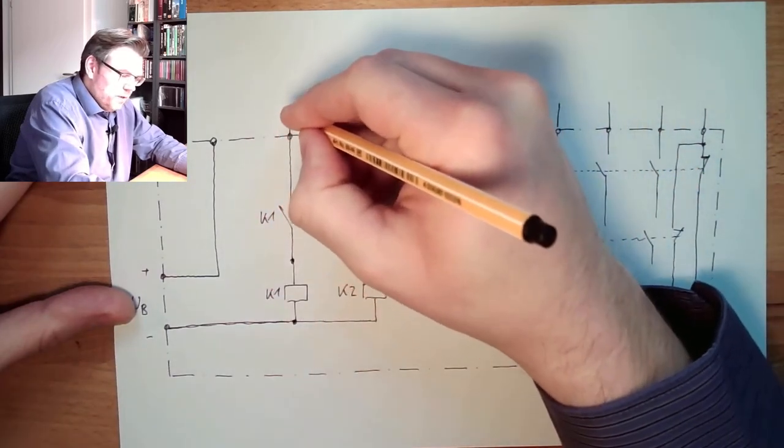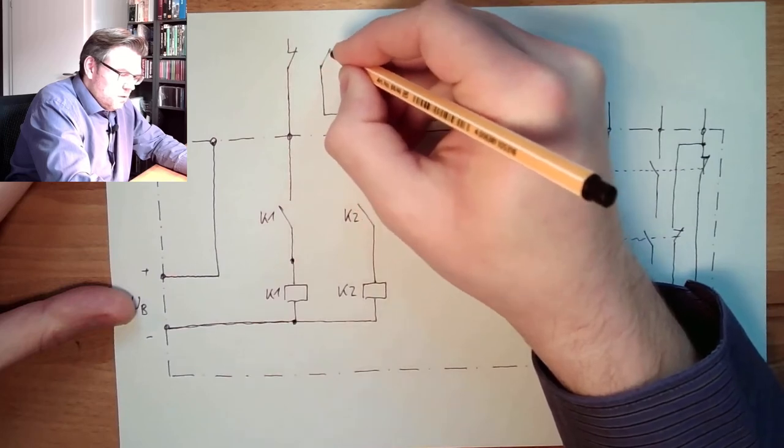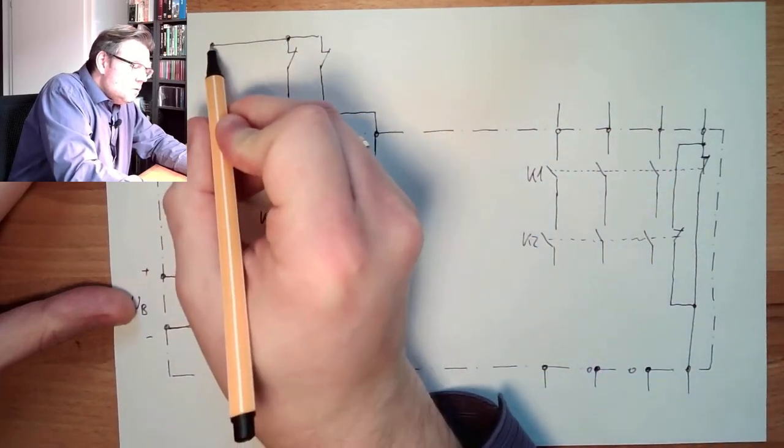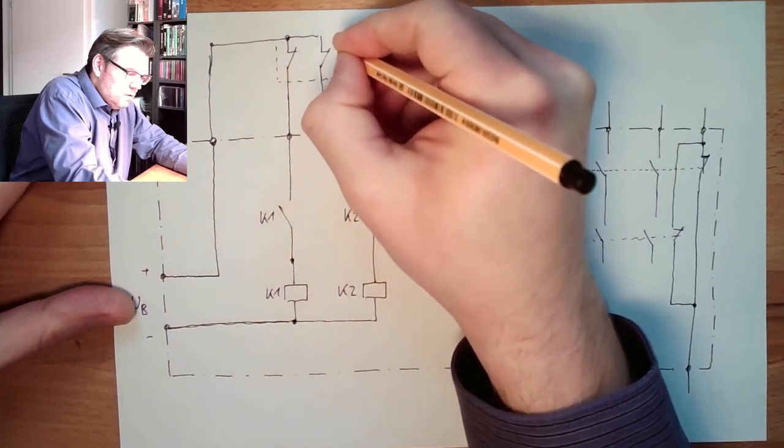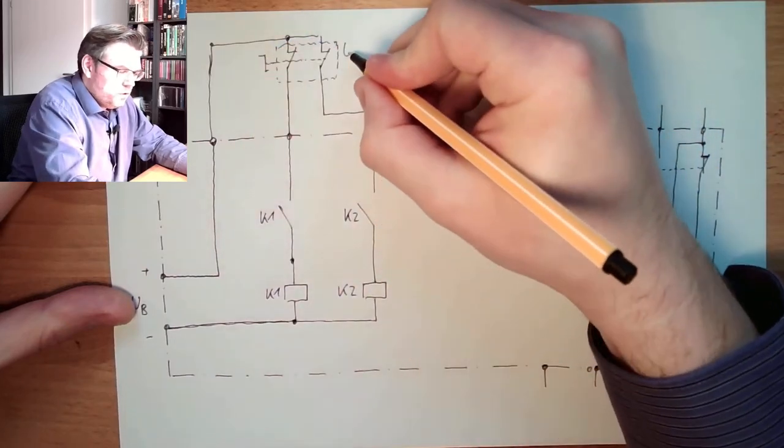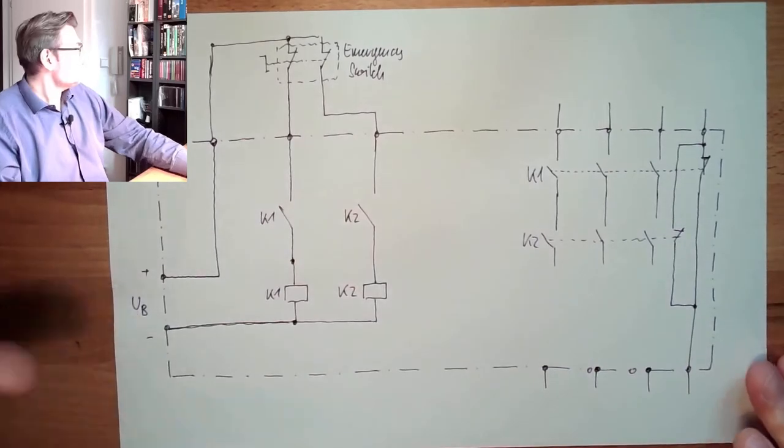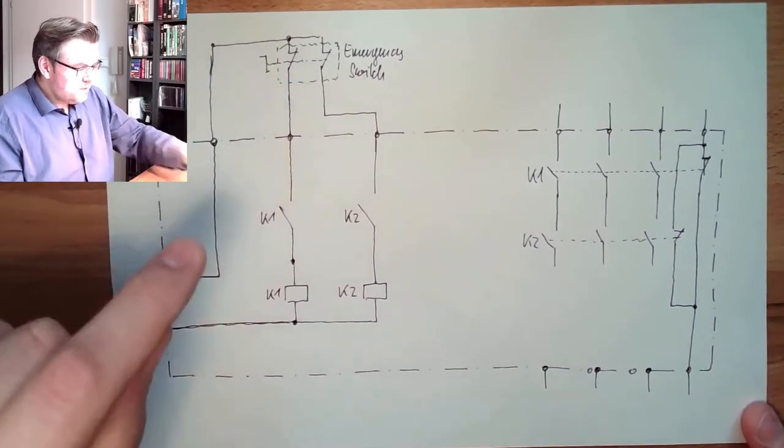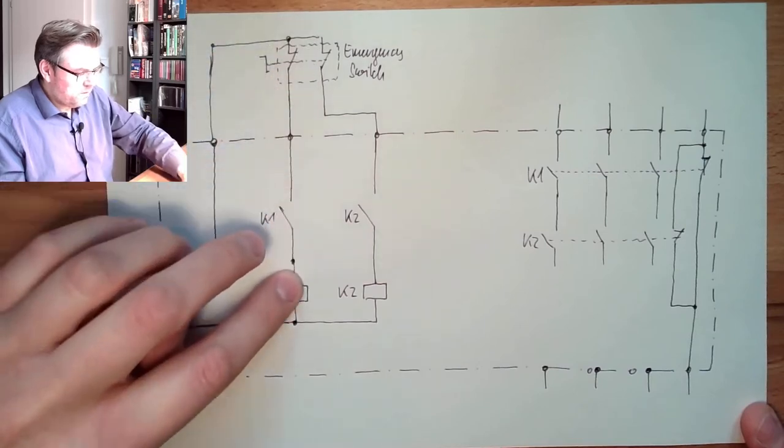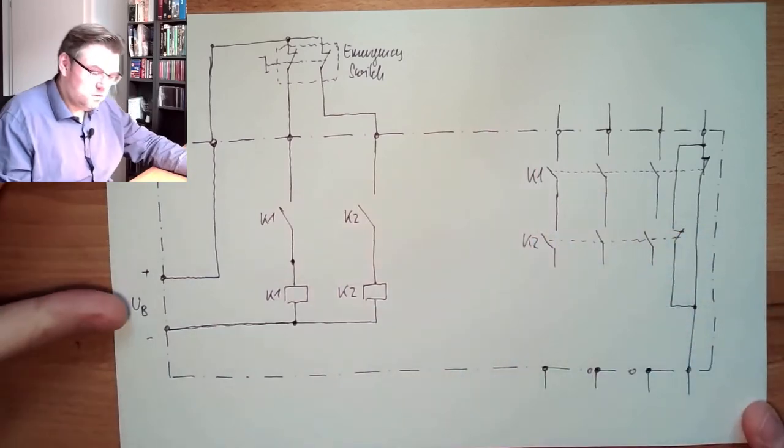And here are two terminals and I just go to a switch, emergency stop switch, which I connect to the plus. Okay, so this here is the emergency switch. If I push this, I will open here. Plus is no longer connected to here. K1 will open, K2 will open. That's it. Both are open.